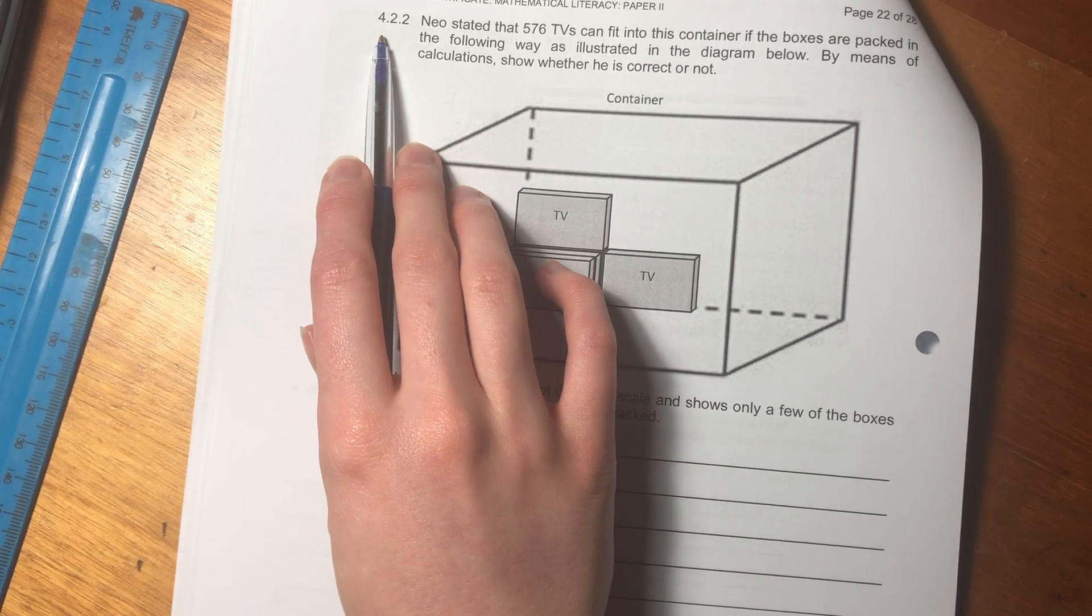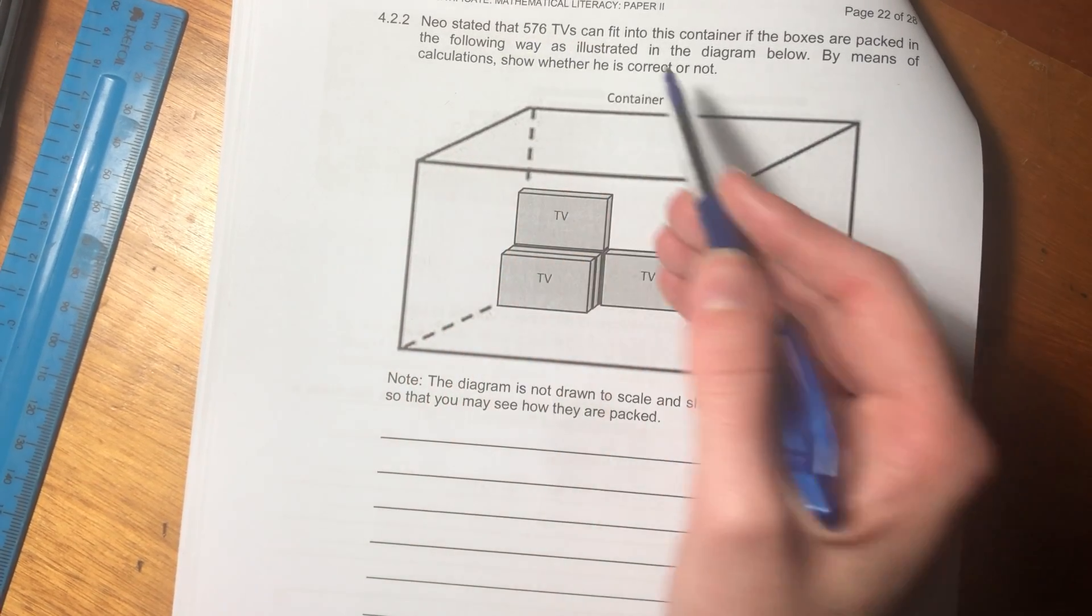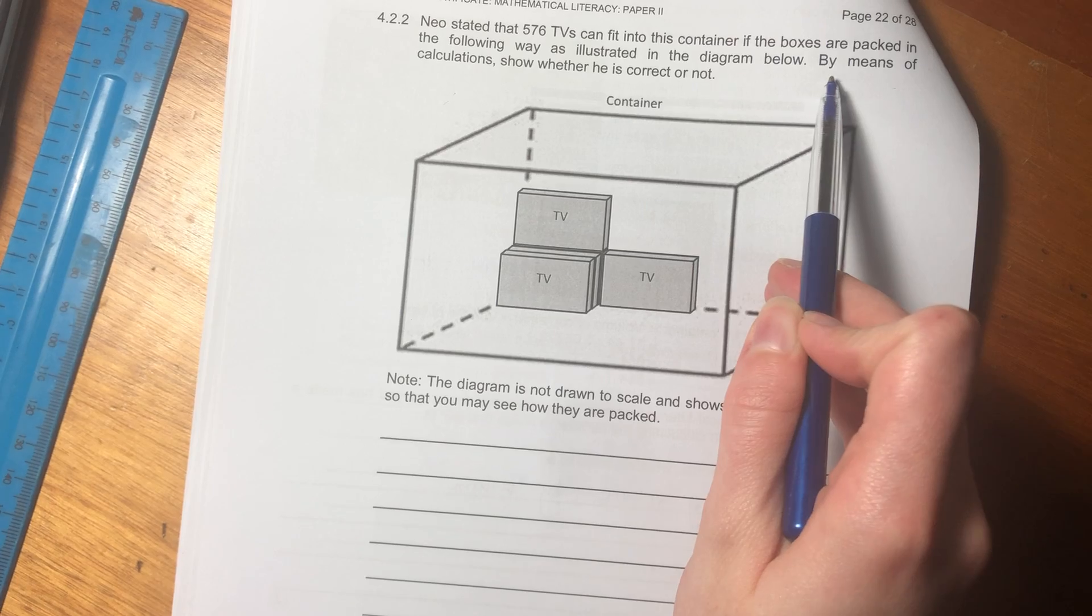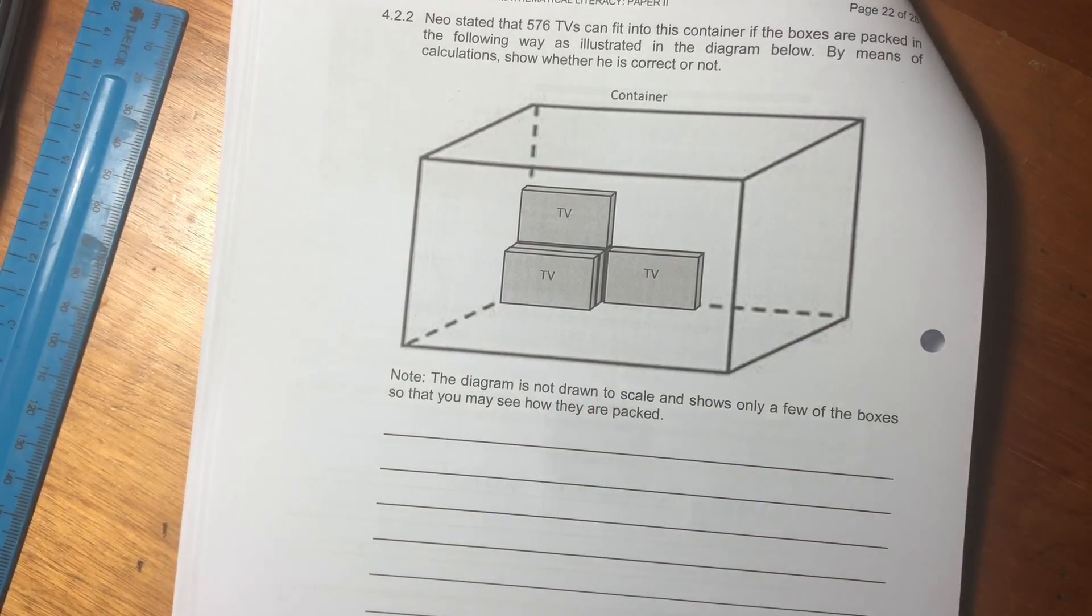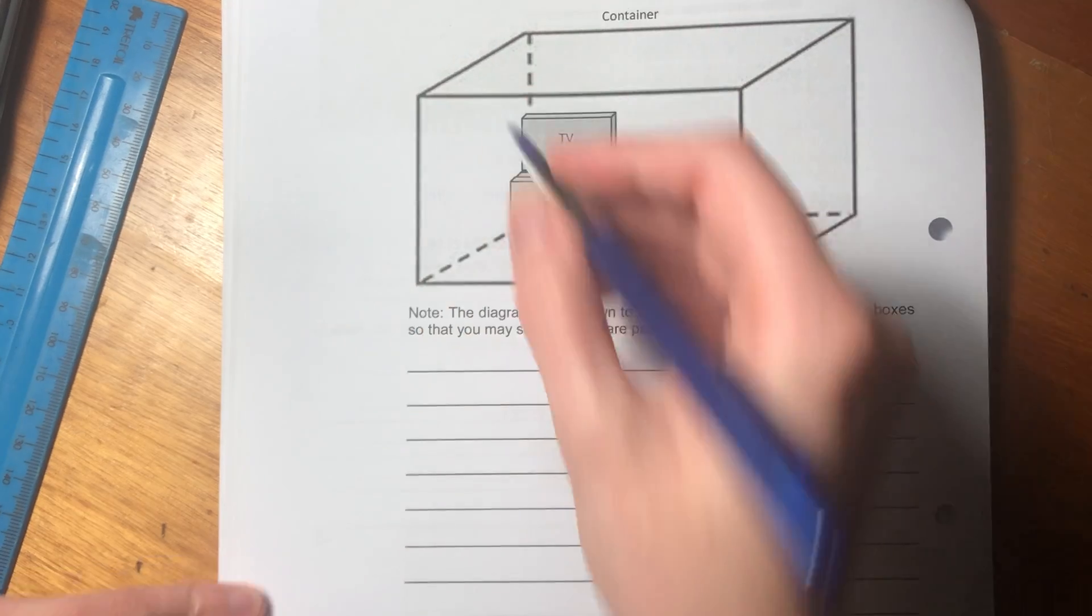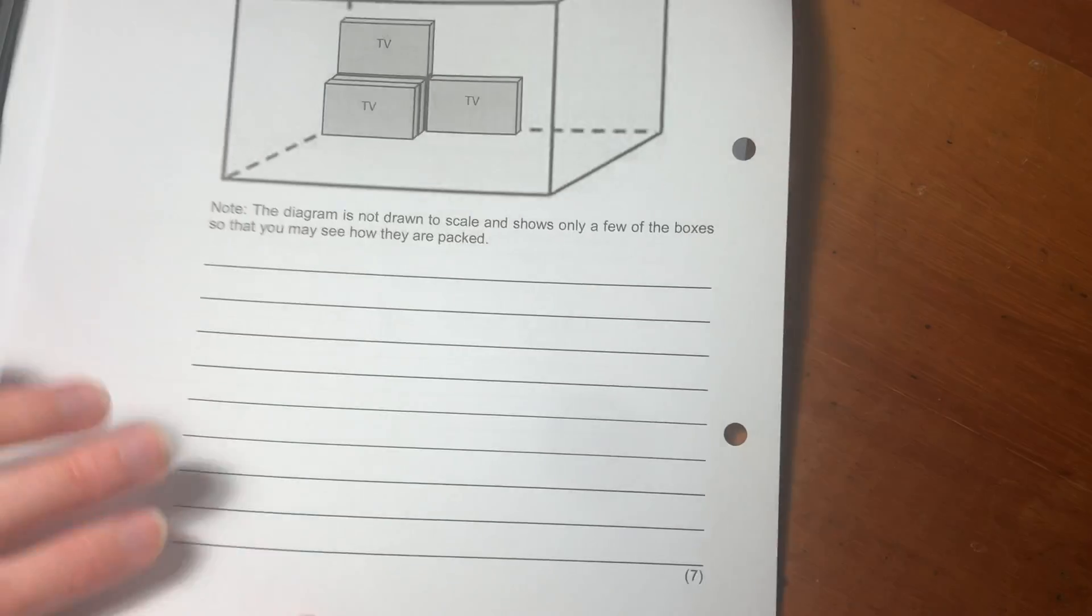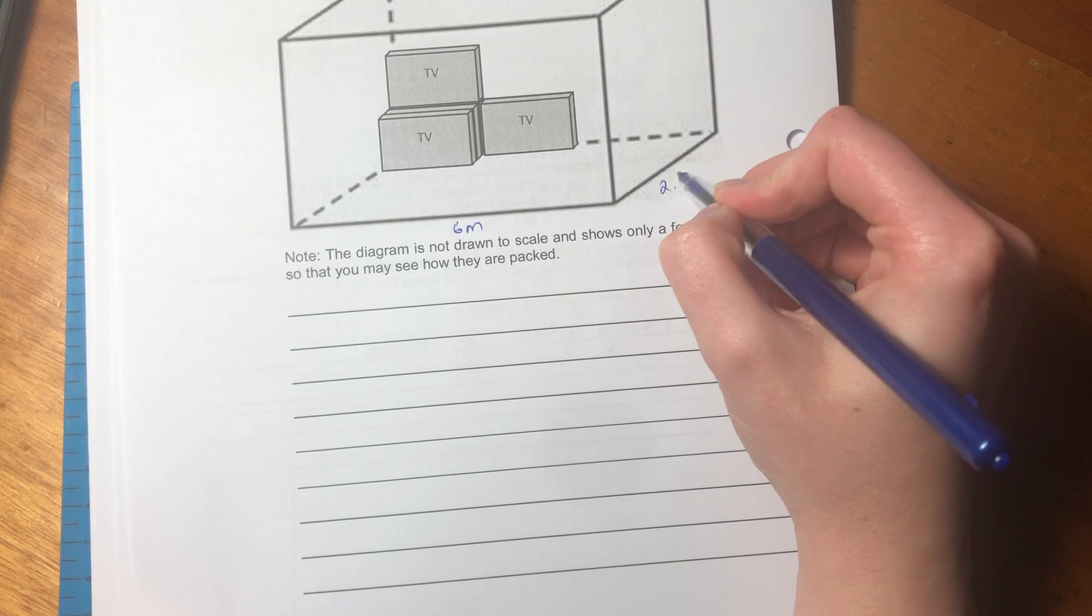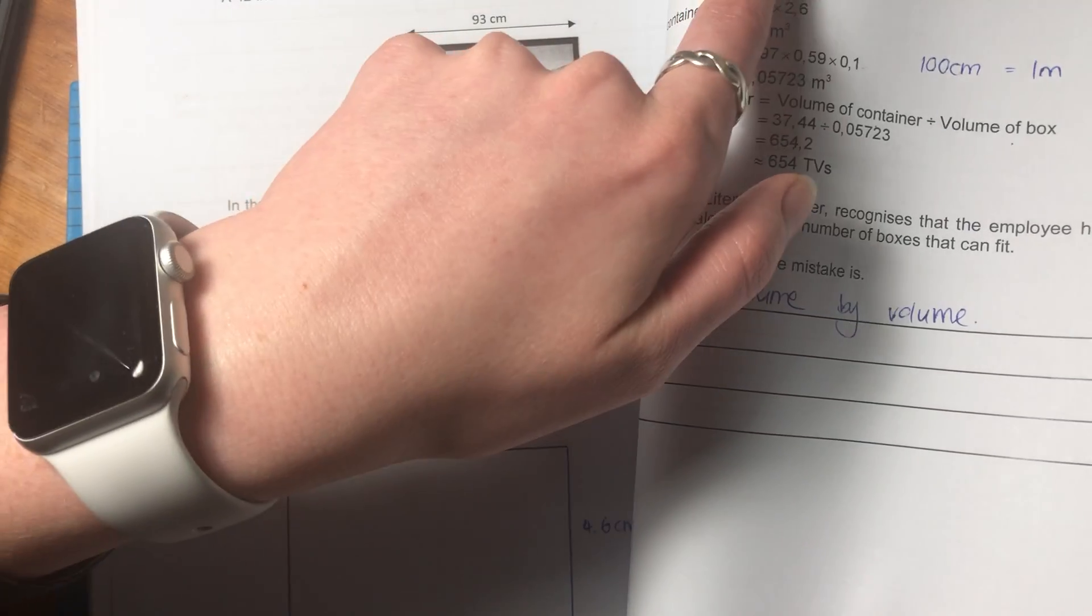So let's look at 4.2.2. So it says, Neo stated that 576 TVs can fit into this container if the boxes are packed in the following way as illustrated in the diagram below. By means of calculations, show whether he is correct or not. So remember, we have the length. Let's just find the different measurements that we have over here. We have 6, 2.4, and 2.6.